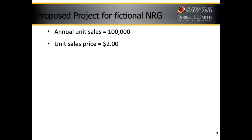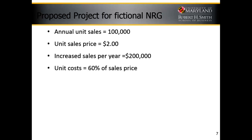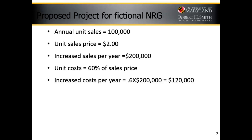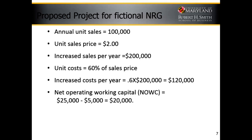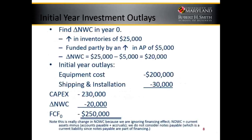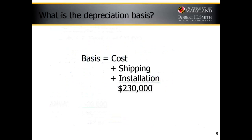We're going to sell 100,000 units at $2 a unit, increasing our sales per year to $200,000. Unit costs — our cost of goods sold and any selling expenses — will be 60% of our sales price, or $120,000 a year. We're going to need some net operating working capital of $20,000 a year; we can finance some of it with accounts payable or increased inventory. Our tax rate is 40% and cost of capital is 10%.